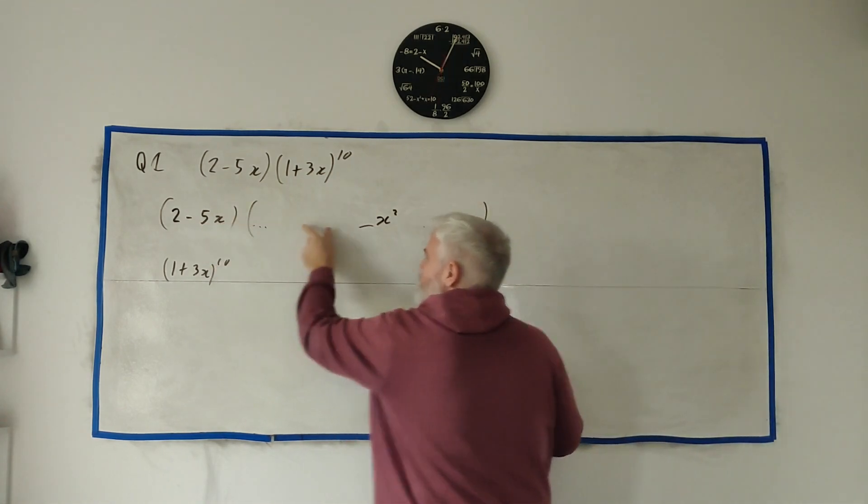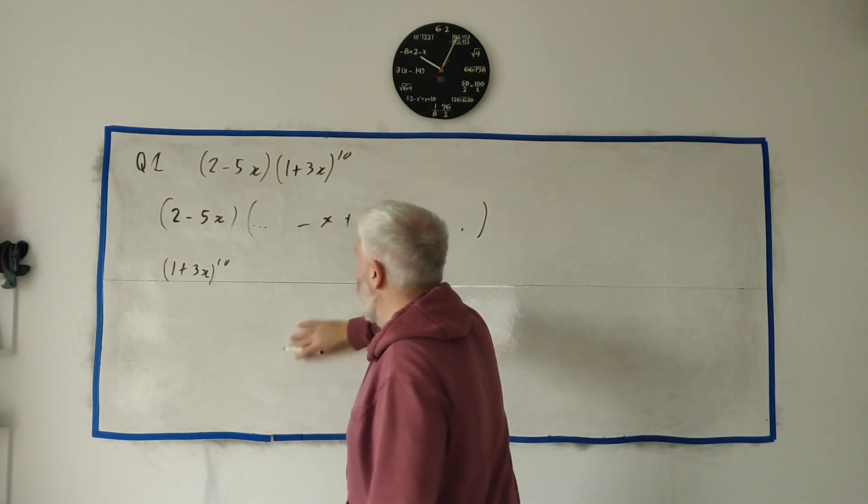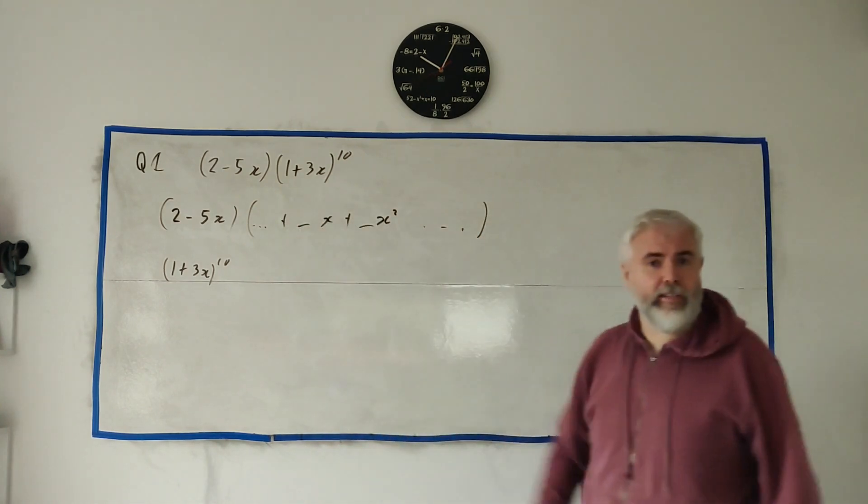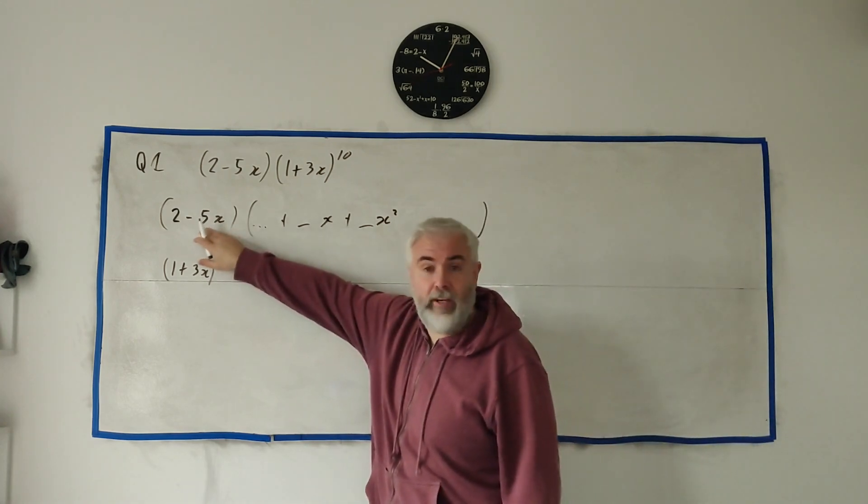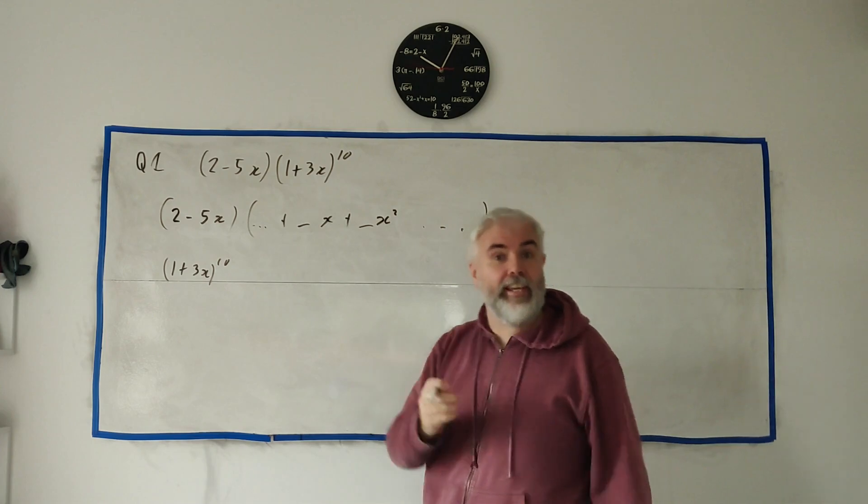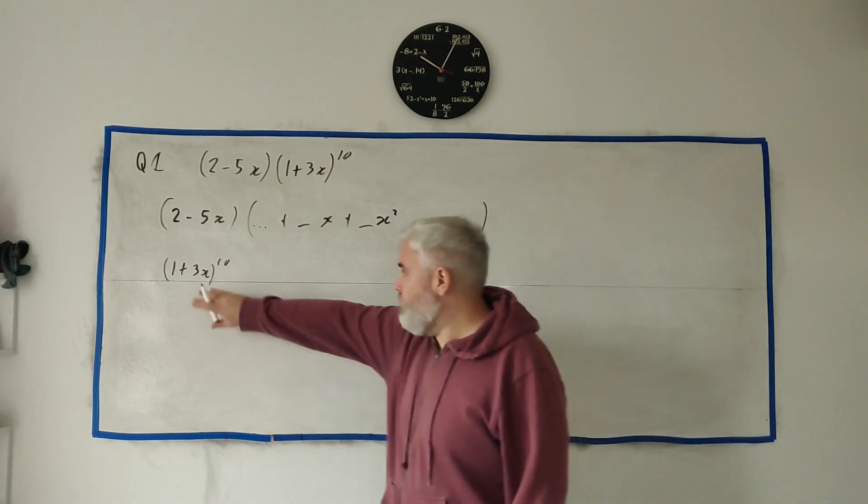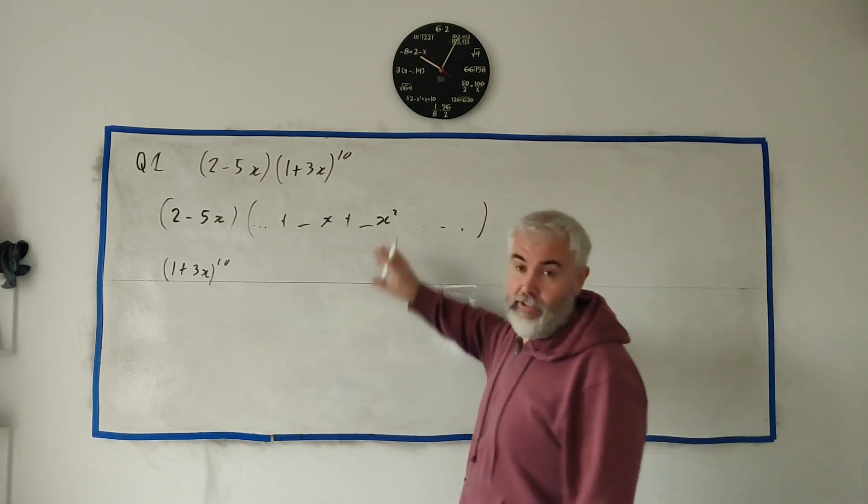But we're also going to multiply by this 5x, which means I'm also interested in the x part, because that's going to end up multiplying by this 5x. So both of these terms are important to find the x squared part. Hopefully that's clear.